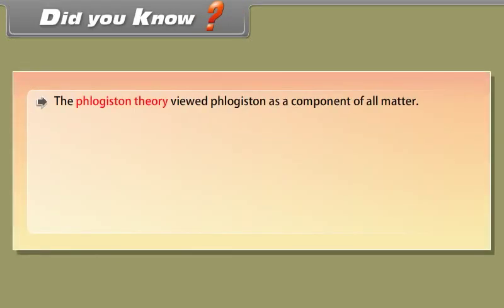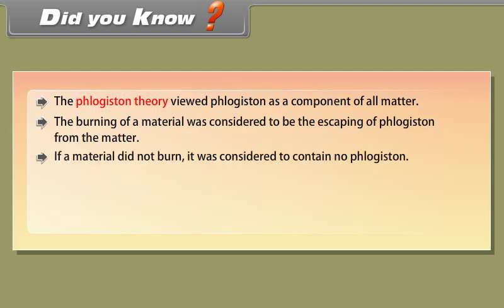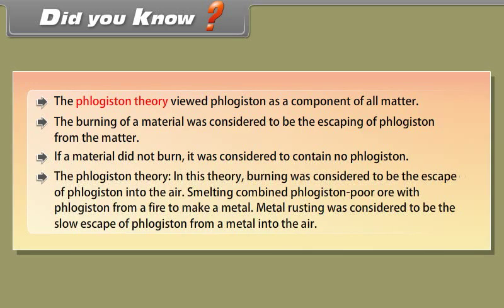The phlogiston theory viewed phlogiston as a component of all matter. The burning of a material was considered to be the escaping of phlogiston from the matter. If a material did not burn, it was considered to contain no phlogiston. In this theory, burning was considered to be the escape of phlogiston into the air. Smelting combined phlogiston-poor ore with phlogiston from a fire to make a metal. Metal rusting was considered to be the slow escape of phlogiston from a metal into the air.